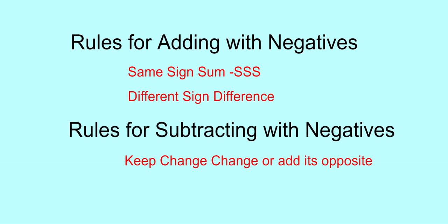We're going to first review some of our rules for adding and subtracting with negatives. For adding with negatives: same sign sum, and different signs difference. Same sign sum means addition; different sign difference means we use subtraction. For subtracting with negatives, we change the subtraction problem into an addition problem, and then follow the rules for addition to solve it.